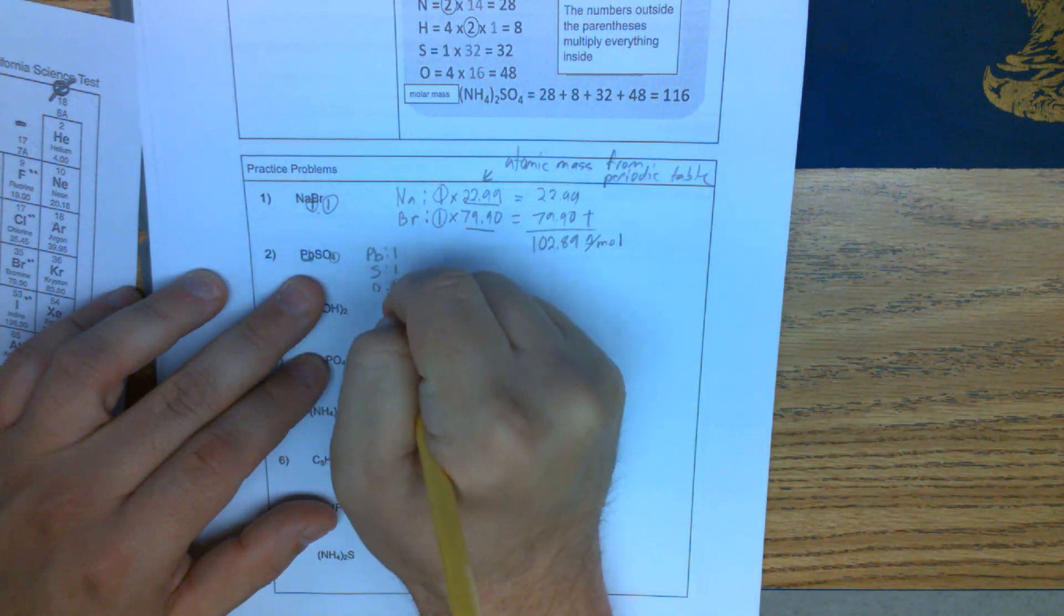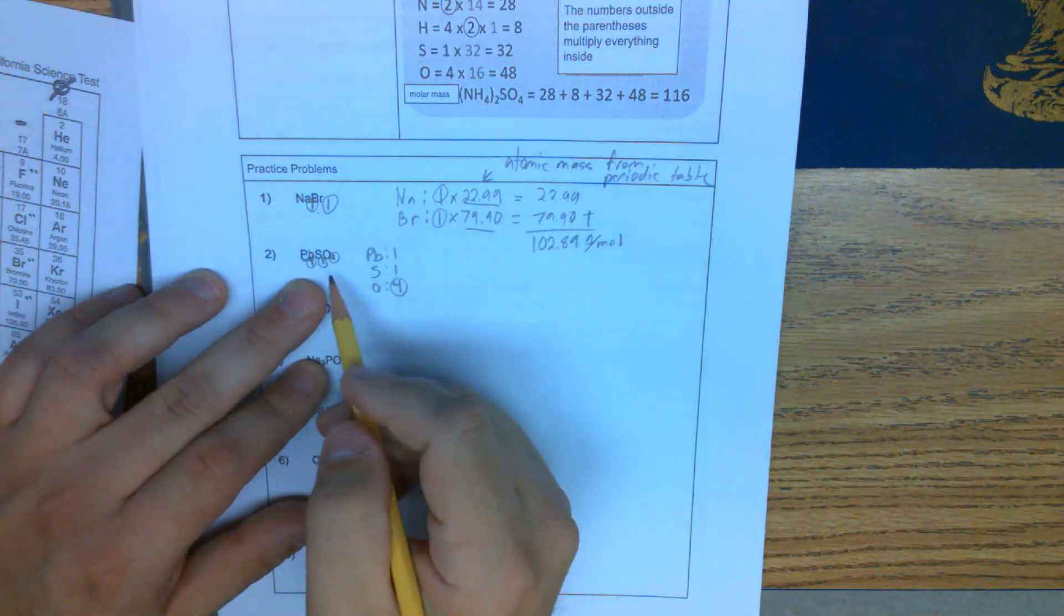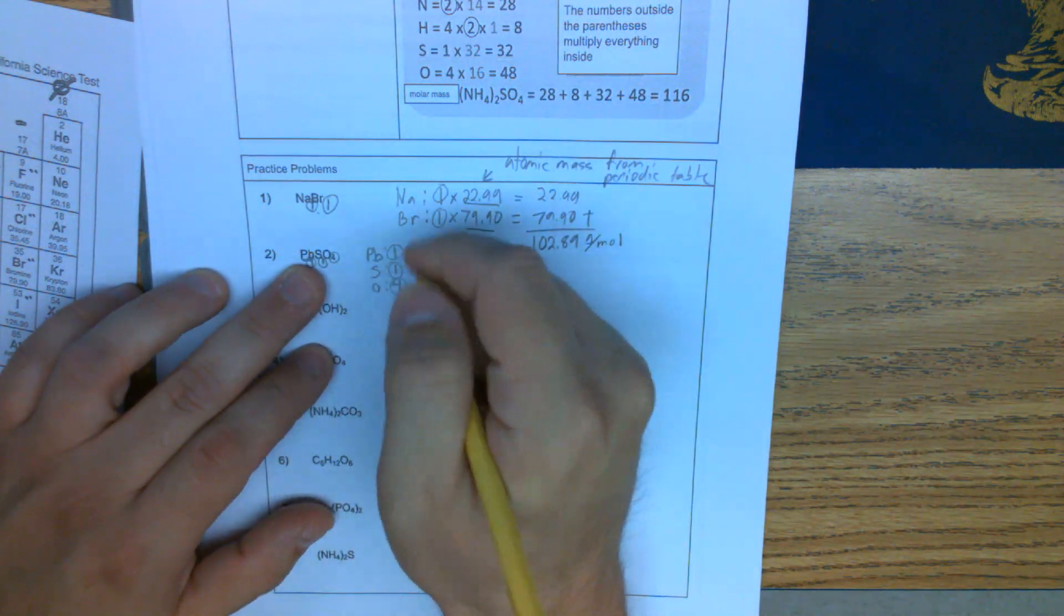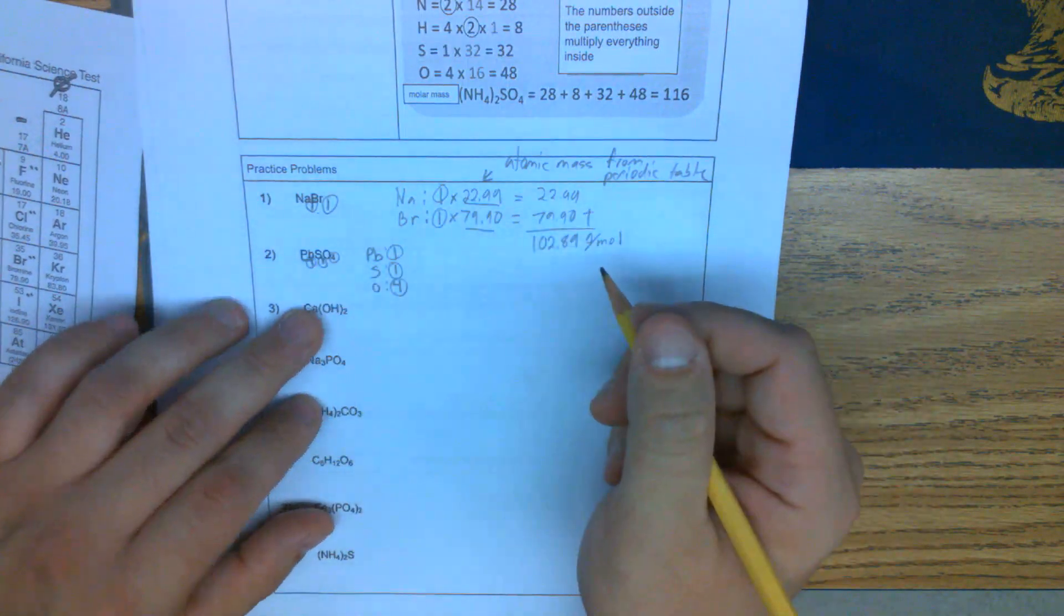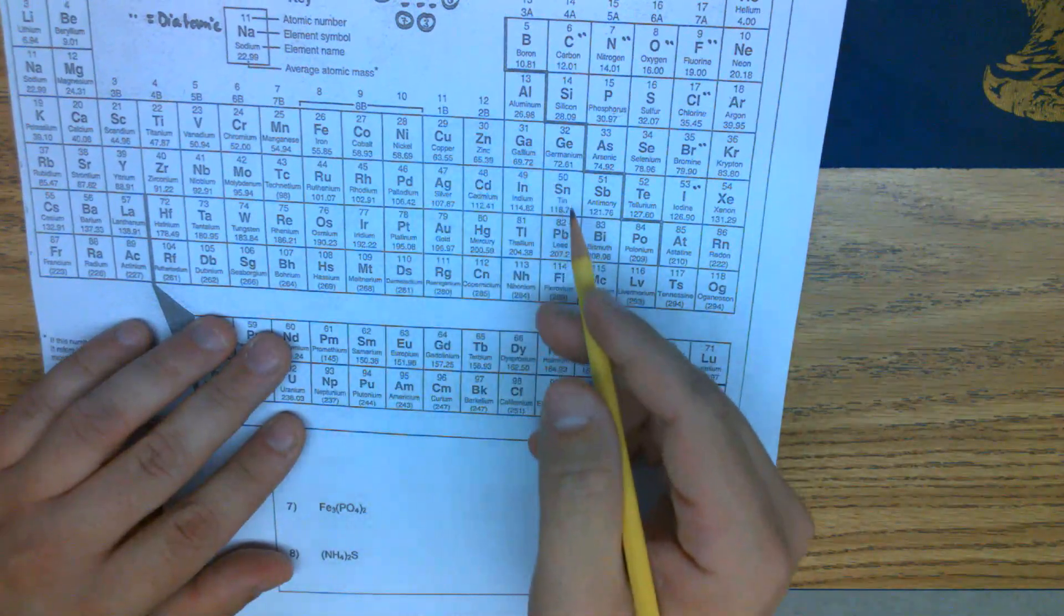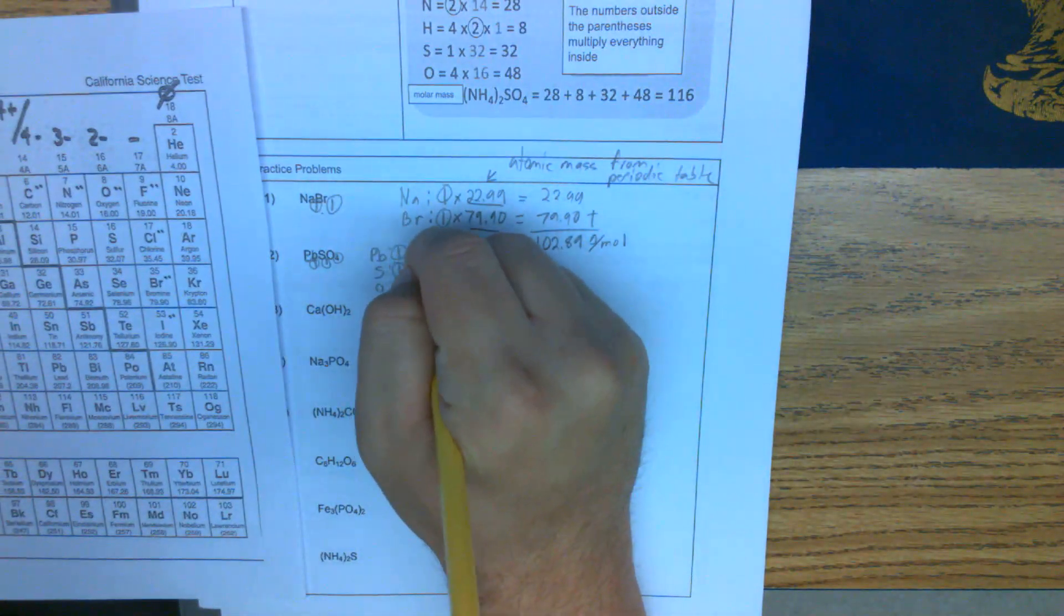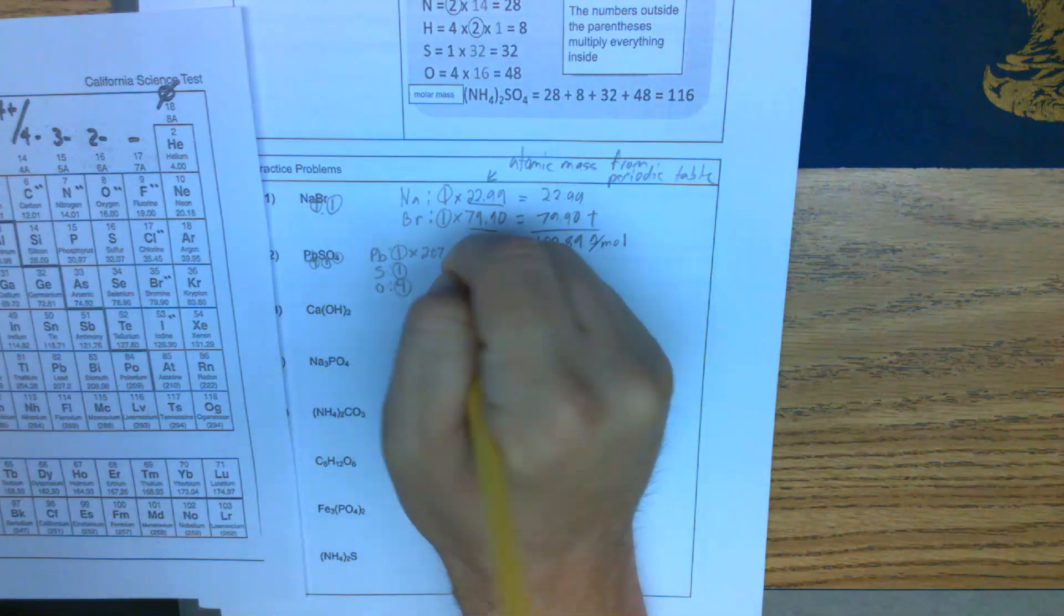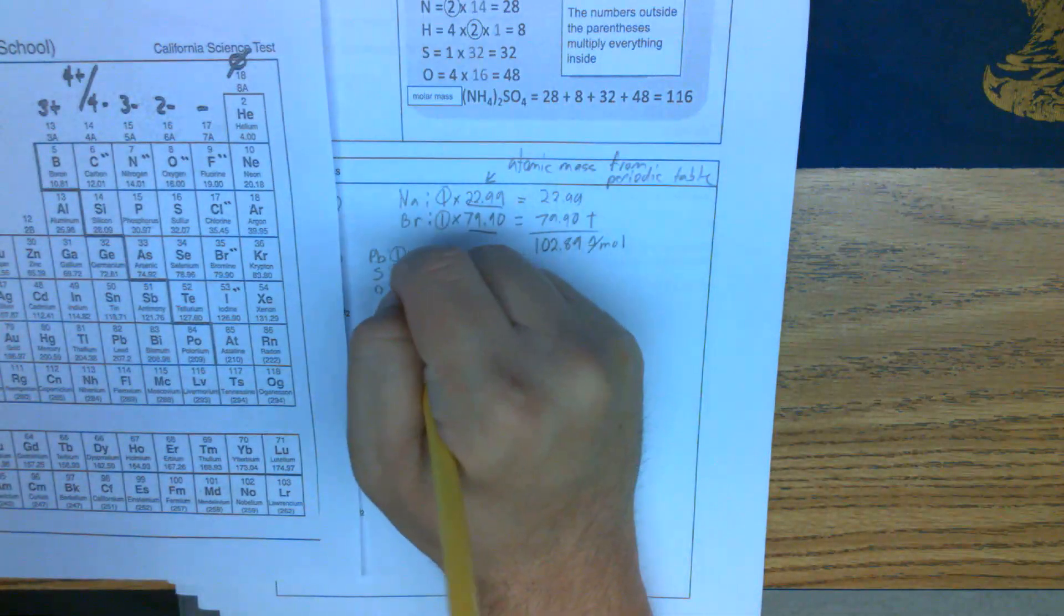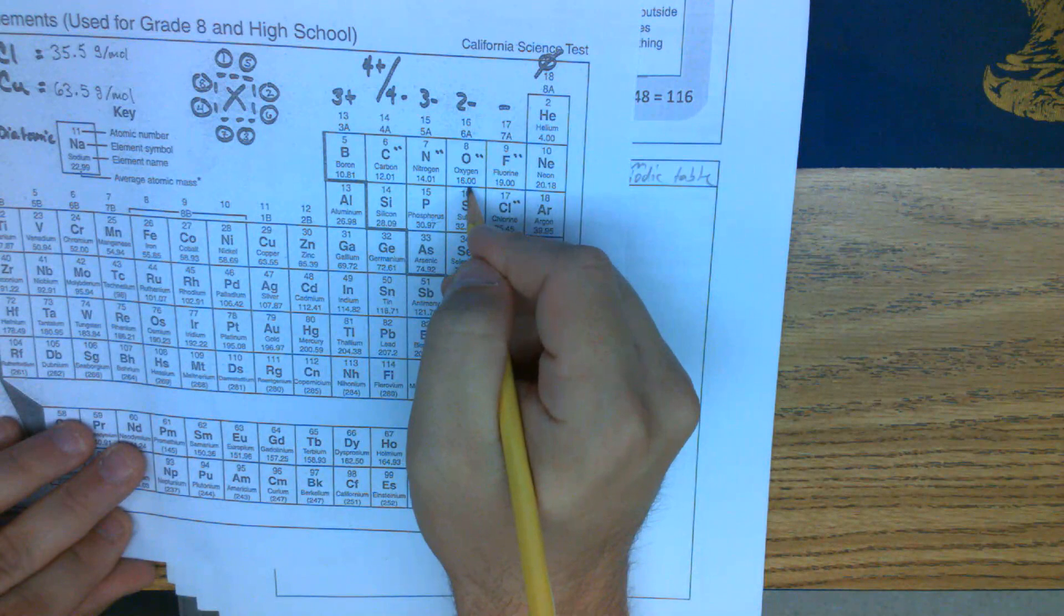Remember these numbers that we're getting here. We have one Pb, one S, and four O's. These are where we're getting our numbers. Let's look at the periodic table. Pb, lead, is here, 207.2. Sulfur is here, 32.07. And oxygen is here, 16.00.